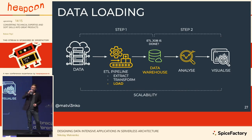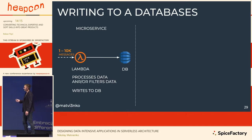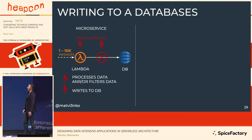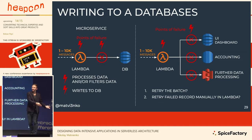Now let's focus on data loading — loading data to some storage or data warehouse. A Lambda function can receive up to 10,000 messages if using Kinesis Streams. But if it processes and writes to the database, it has two points of failure: an issue might happen during processing or during writing. Usually we also have to write to different databases — for a UI dashboard, for accounting, or back to the data lake in a structured view — which means more points of failure.